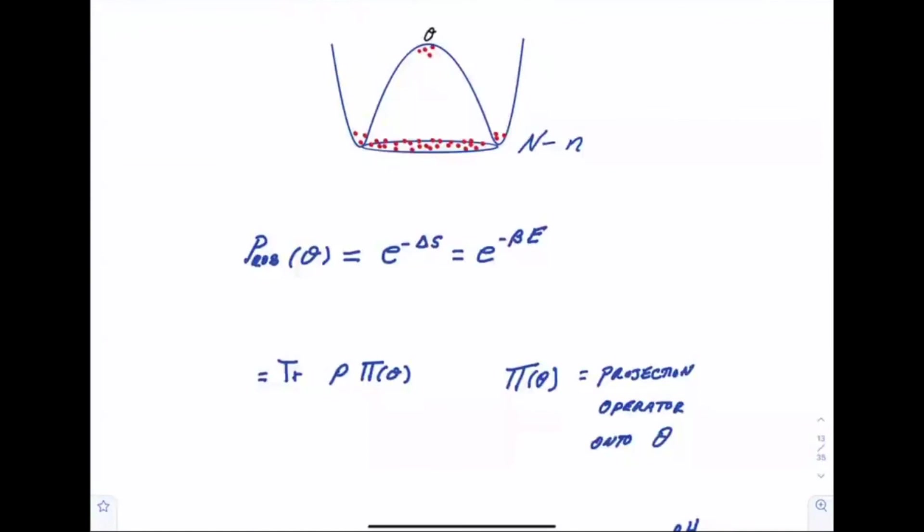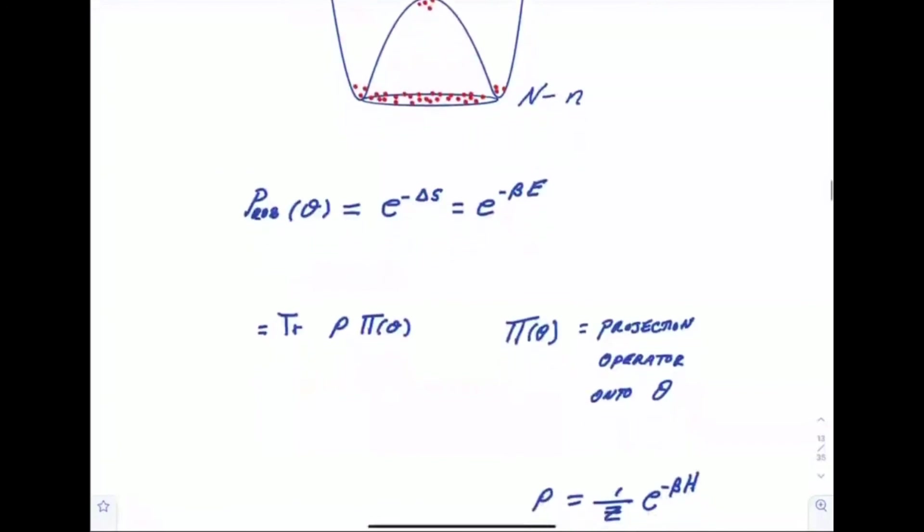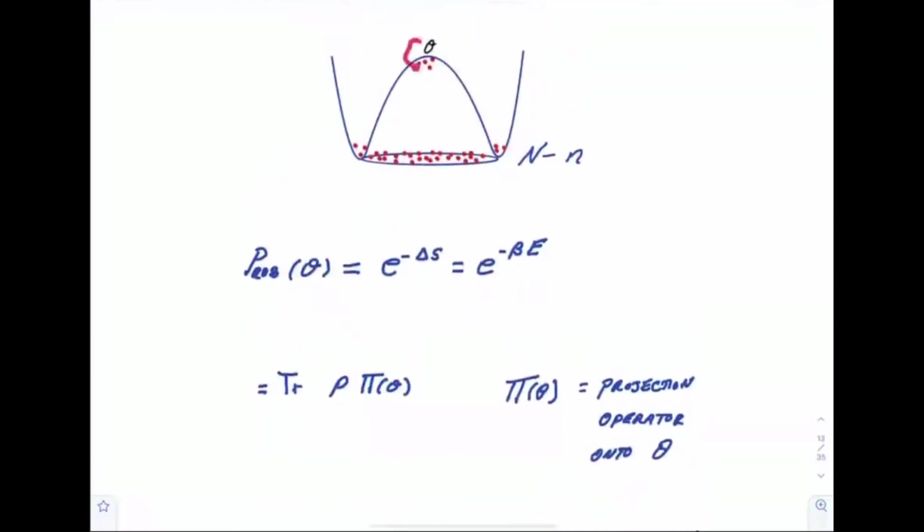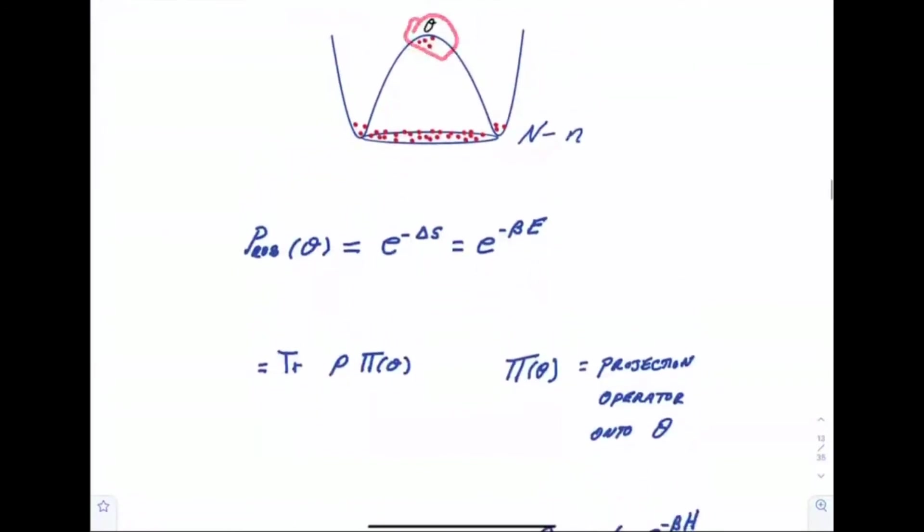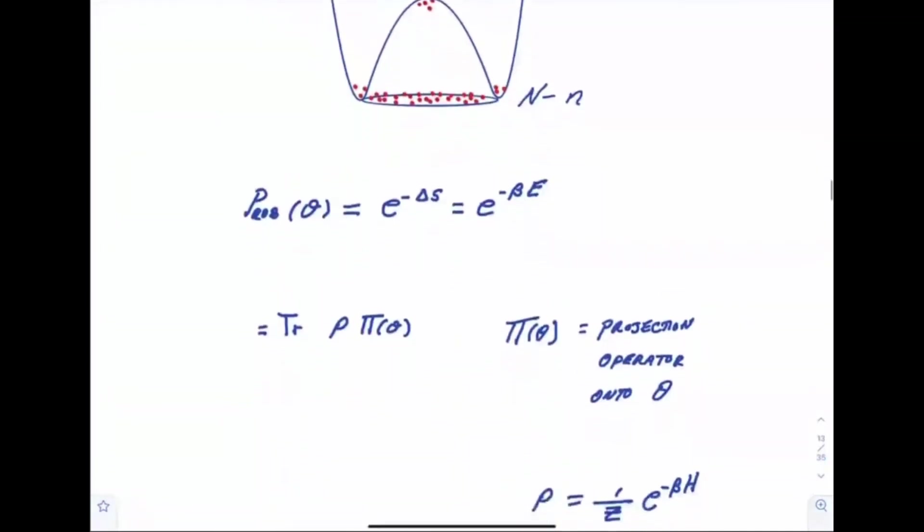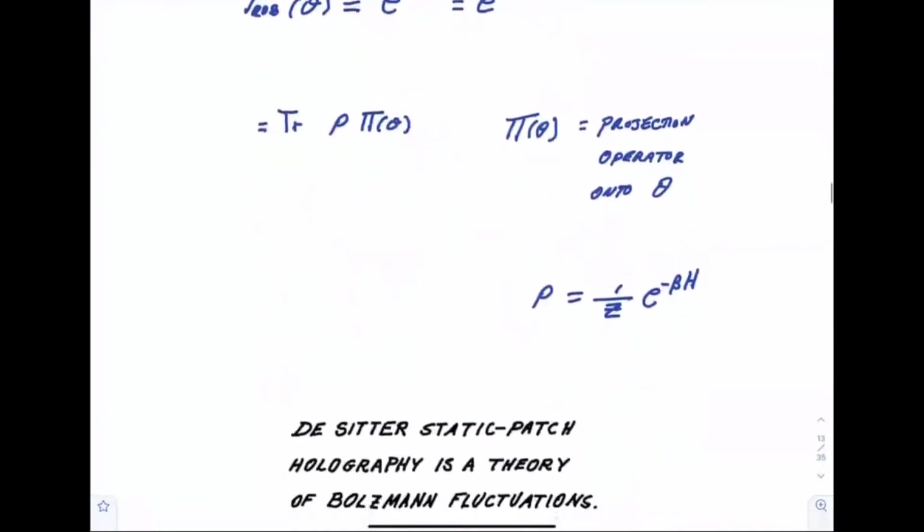That's one of Boltzmann's formulas. Another formula is that it's e to the minus beta times the energy of the fluctuation. Those two are consistent for an isolated system. And the last formula is let's suppose that we can quantum mechanically construct a projection operator that projects out states in which this theta object is present. Then the trace of rho times pi of theta is the probability that theta is present. All three of these are basically the same formula, where rho is of course just the thermal ensemble.